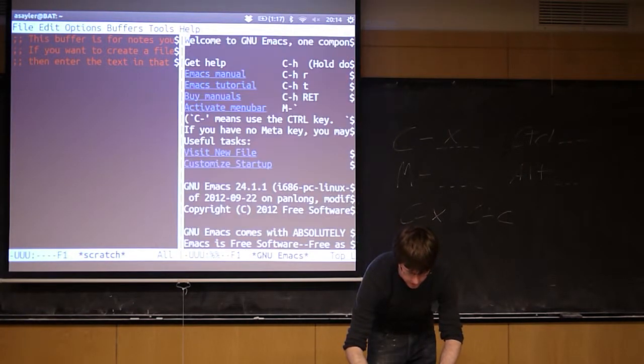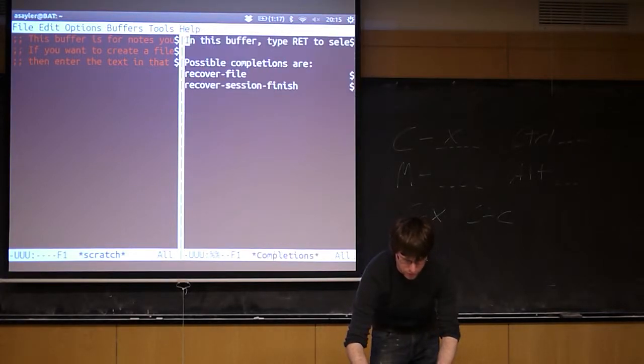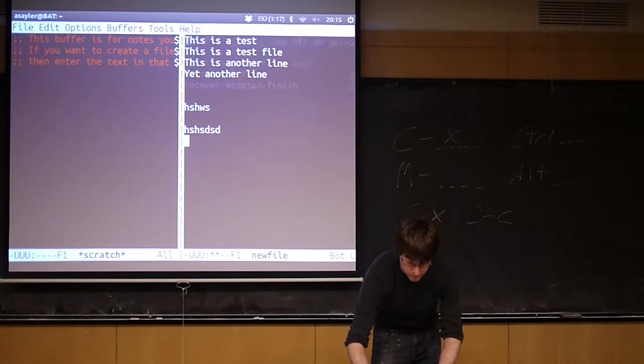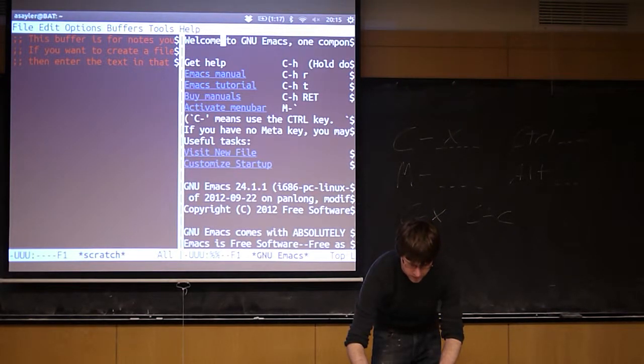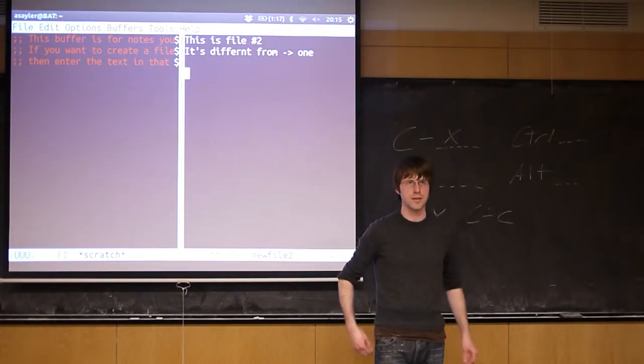It's not actually still there. I don't know why it's still listed, that's a good question. But if you notice when I cycle through things, we never actually get to it. There's new file two, there's new file, there's new file two again. We have closed new file three, it just hasn't updated off the list yet.